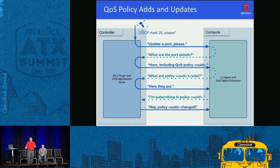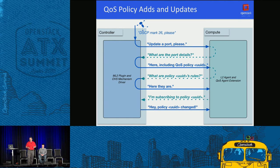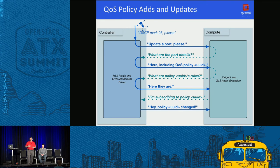There is DSCP-specific code on both the controller and the agent that gets loaded. When you assign a particular DSCP mark to a particular port, you initiate a transaction to update the port. The QoS policy gets inspected, the compute node fetches the rules, and then the compute indicates that subscription to the policy has been accomplished. The controller then notifies the compute when the policy changes.